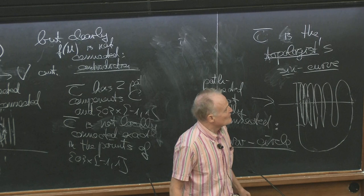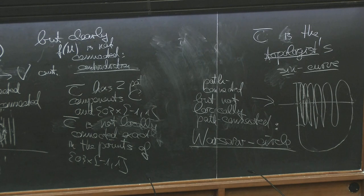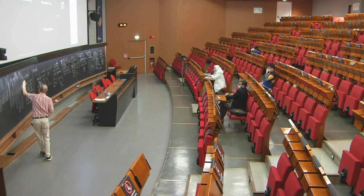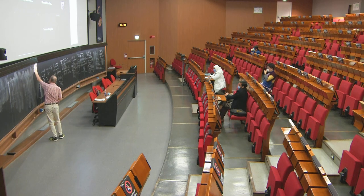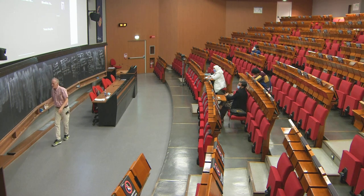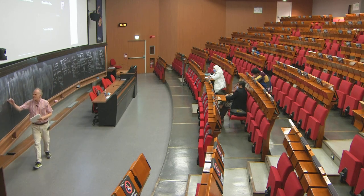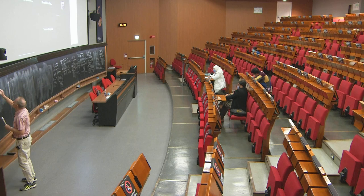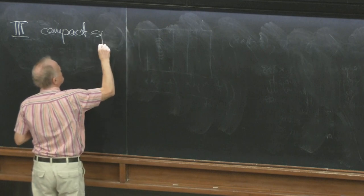So these are interesting examples: the topologist's sine curve and the Warsaw Circle. This finishes the second chapter for the moment. We come back to the ordered square — we will see it again. Now we talk about compact spaces. This is the third chapter: compact spaces.